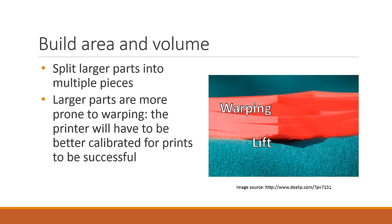3D printers typically work best with smaller parts. Larger parts have a tendency to warp. The lower layers of plastic cool and shrink while the top layers are still larger and warm. The difference in size causes lower layers to lift off the print bed, or higher layers to separate — also known as delamination. This effect becomes more pronounced with larger parts.